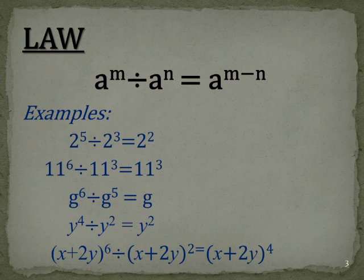g to the 6 divided by g to the 5 is equal to g. Now 6 take 5 is 1, and referring back to the previous video, when you've got an index of 1, you don't write it in. y to the power of 4 divided by y squared is equal to y squared, because 4 take 2 is 2.